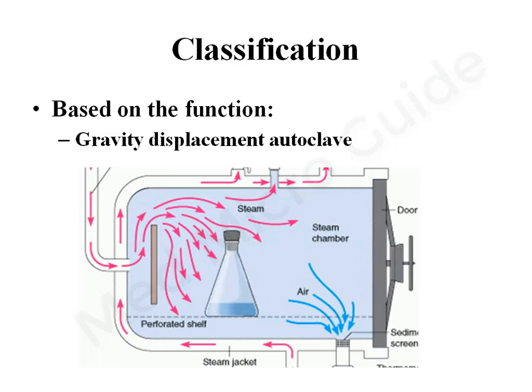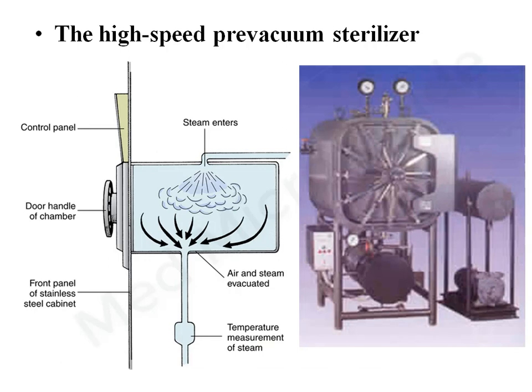In gravity displacement autoclave, steam is released either from the sides or from above. Steam is lighter than air, so it forces the air to pass through the drain at the bottom of the chamber. If air is not completely removed, it interferes with the steam making contact with the load. The steam in gravity displacement autoclave has less penetration capacity for porous loads, so only non-porous loads can be sterilized. For porous loads, a high-speed pre-vacuum sterilizer must be used.